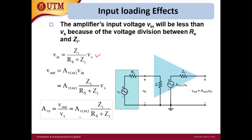The gain of the amplifier depends on your definition. The gain Av can be defined as Vout over Vin, or it can be Vout over Vs. Make sure you know what definition of gain you are using before you do the analysis.